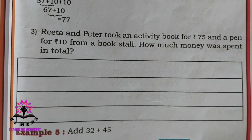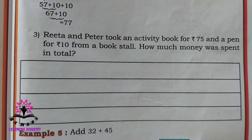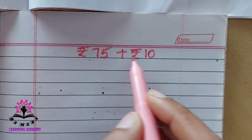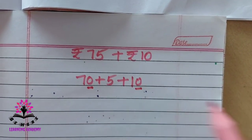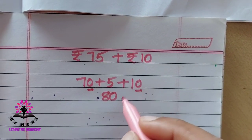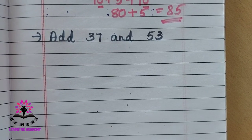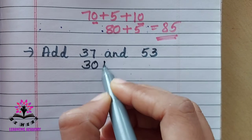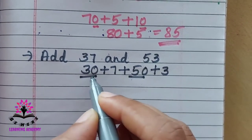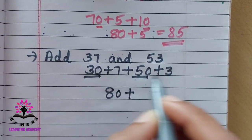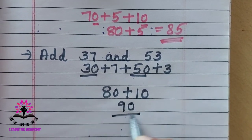Rita and Peter bought an activity book for rupees 75 and a pen for rupees 10 from a bookstall. How much money was spent in total? Write 75 as 70 plus 5, plus 10. The tens: 7 plus 1 is 8, giving 80; then 80 plus 5 is 85. Next problem: add 37 and 53. Write 37 as 30 plus 7 and 53 as 50 plus 3. Tens: 5 plus 3 is 8; units: 7 plus 3 is 10, so carry 1 — 8 plus 1 is 9, giving 90.